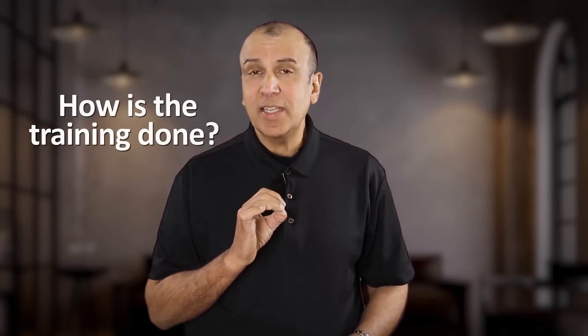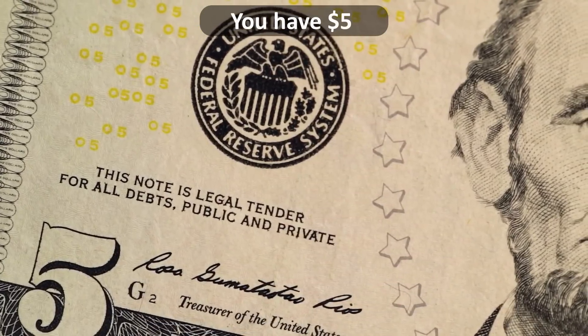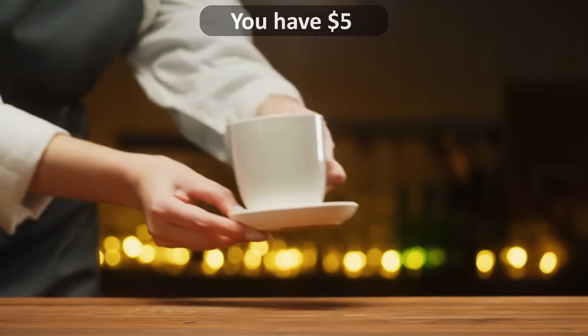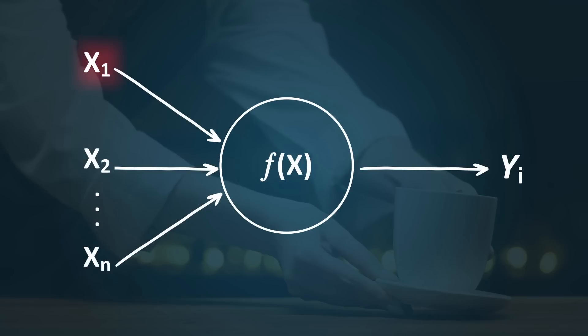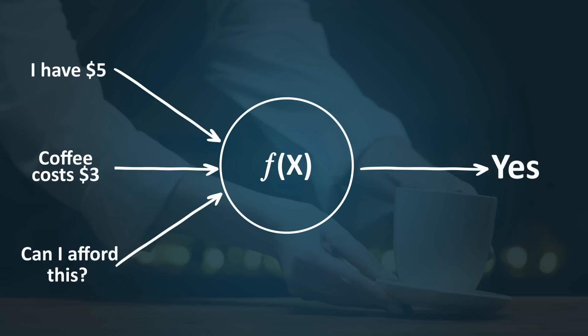So how is the training done? Let's do a very simple example so that you can get an intuitive idea for what's happening. Let's say you have $5. You're trying to determine, can I afford a cup of coffee? The coffee costs $3. So the inputs are $5 representing the money that you have, $3 for the cost of the coffee, and the question, can I afford this? You know the output should be yes, and you're trying to train the system to give you a yes result.